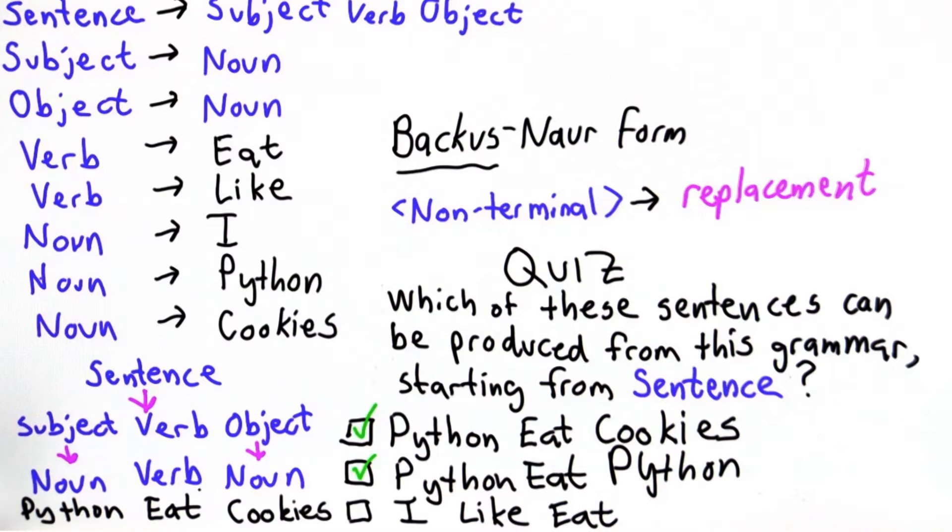We could replace the second noun with Python, using instead the second choice. That would derive the second sentence.